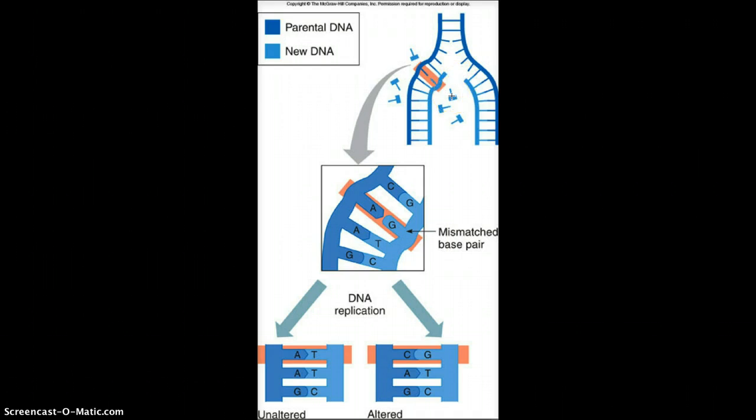And so if you remember your base pairing rules, it's A with T and C with G. So this is showing the nucleotides that are going to get filled in. So what happened here is that DNA polymerase went along, and when it read this base over here, it didn't fill in the correct one over here.